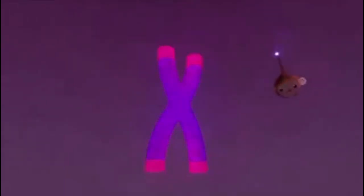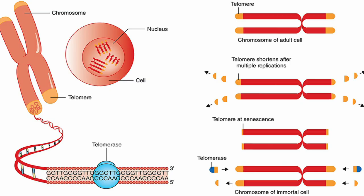Telomere attrition refers to the progressive shortening of telomeres, the protective caps at the ends of chromosomes with each cell division. Telomeres consist of repeated DNA sequences that do not encode specific genes. These sequences serve as a buffer or protective region that prevents the essential coding DNA sequences in the chromosome from being eroded during replication.